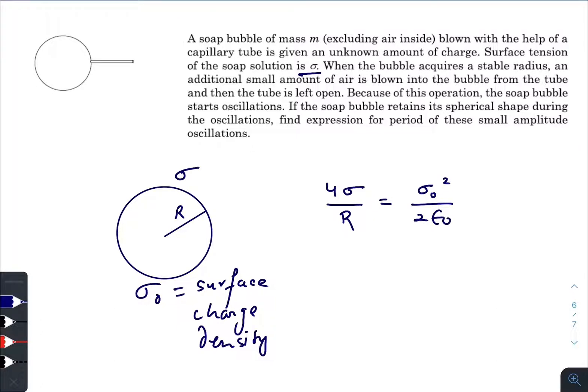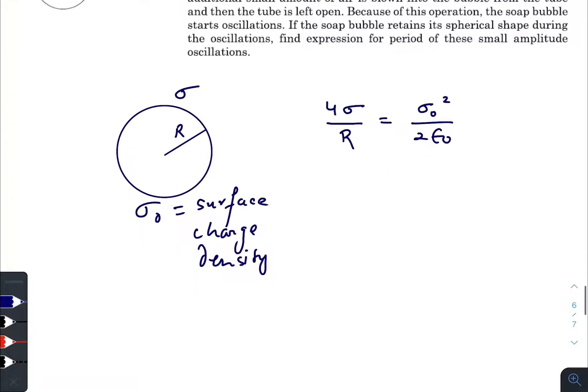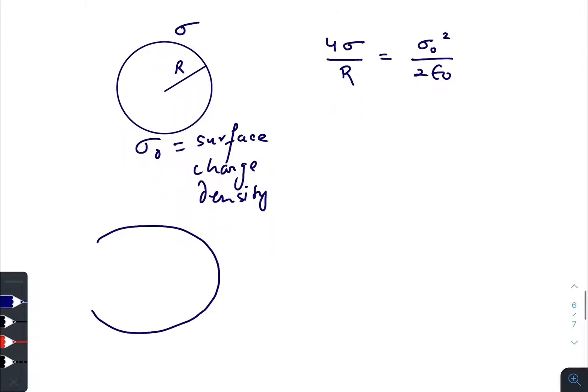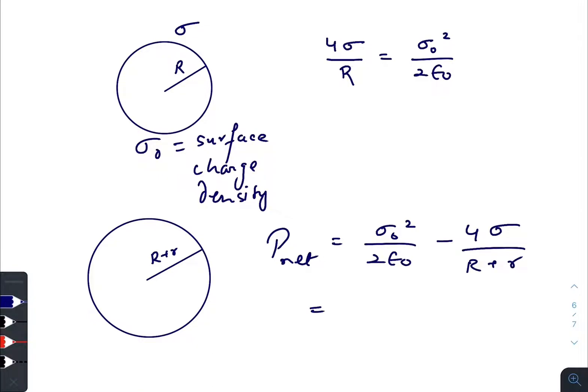Now suppose the radius is increased by a small amount. As this increase in radius does not create a huge increase in surface area, sigma naught remains more or less the same. Net pressure equals sigma naught squared divided by 2 epsilon naught minus 4 sigma over R plus small r, which gives sigma naught squared over 2 epsilon naught minus 4 sigma.